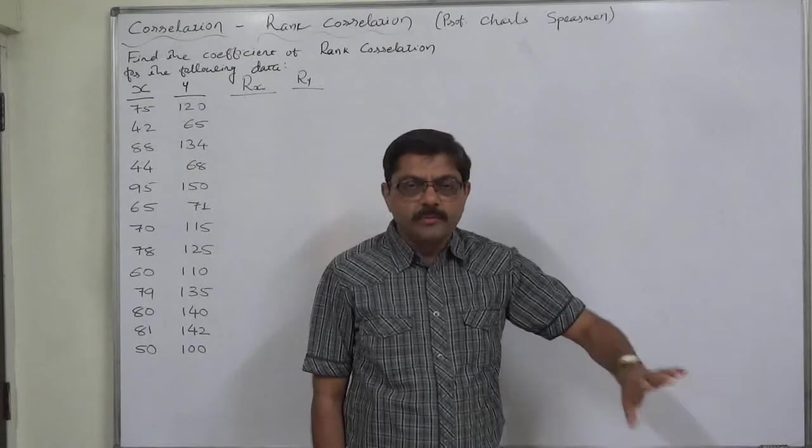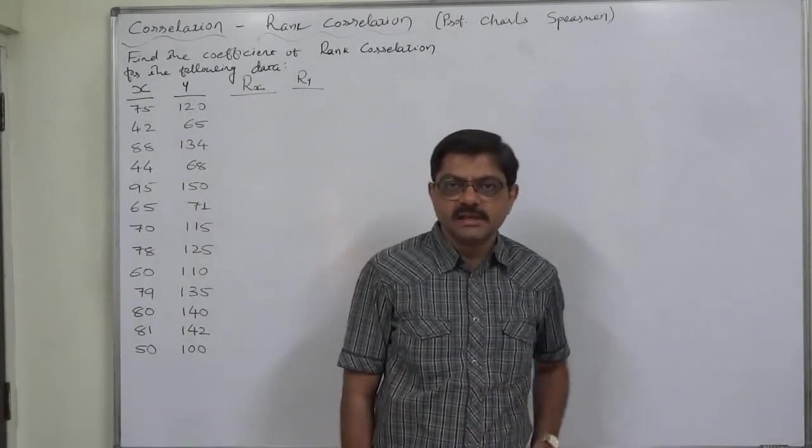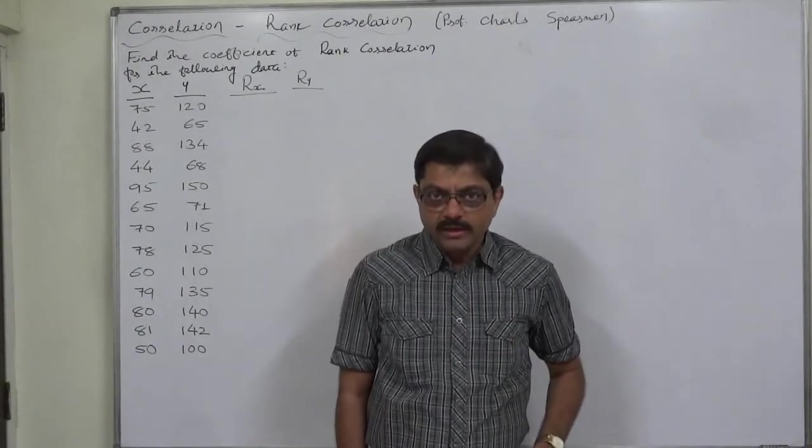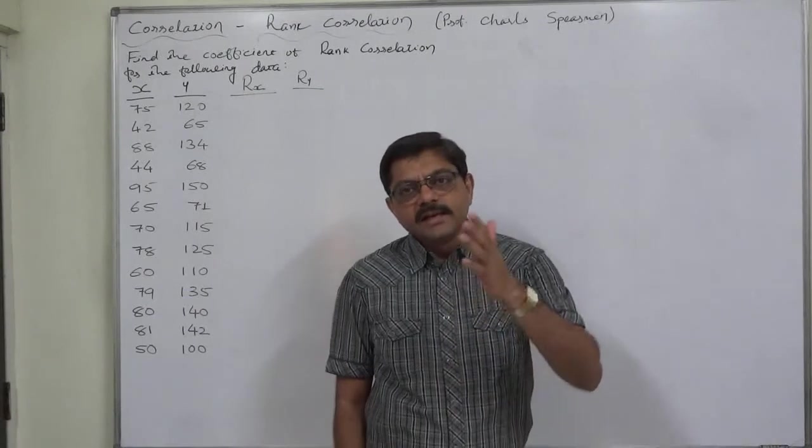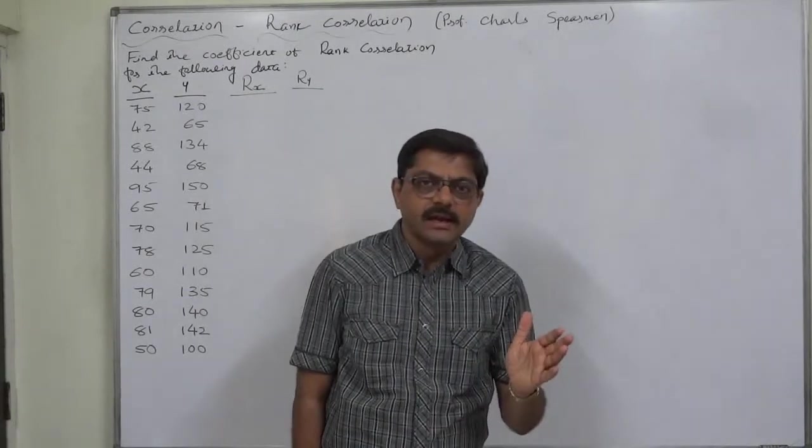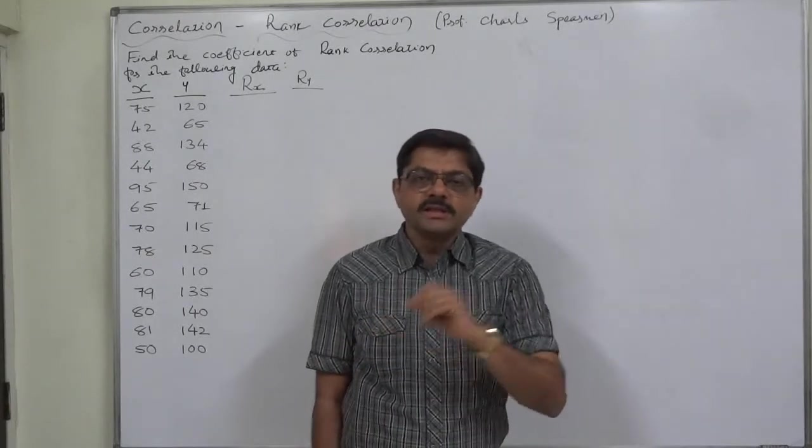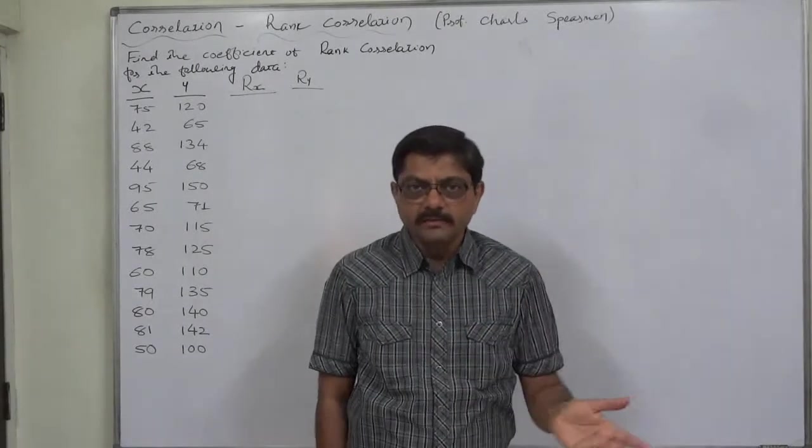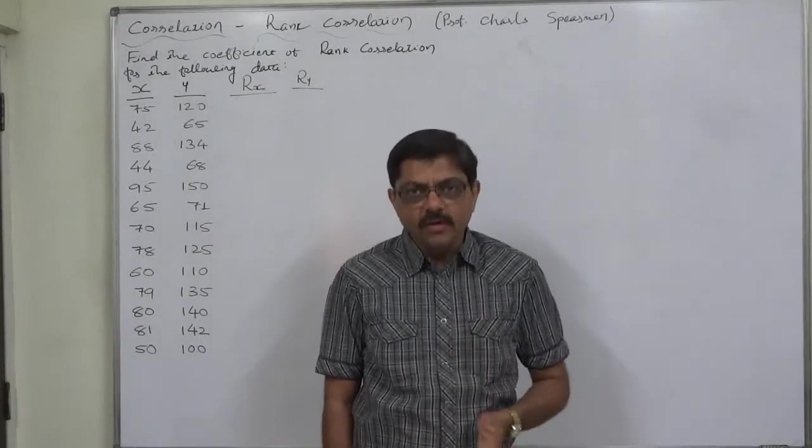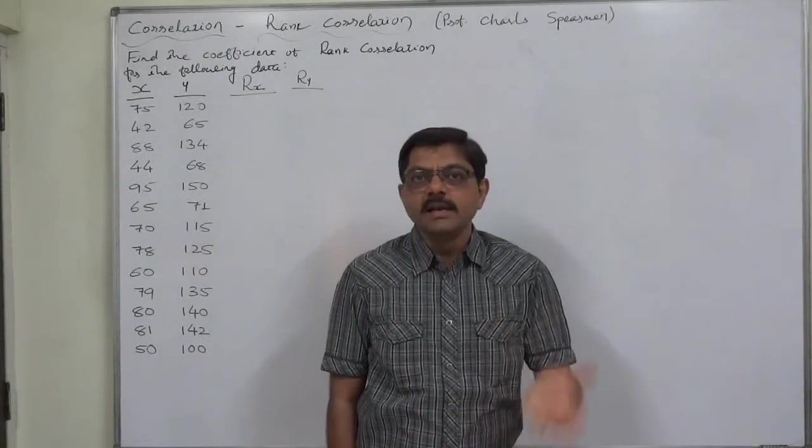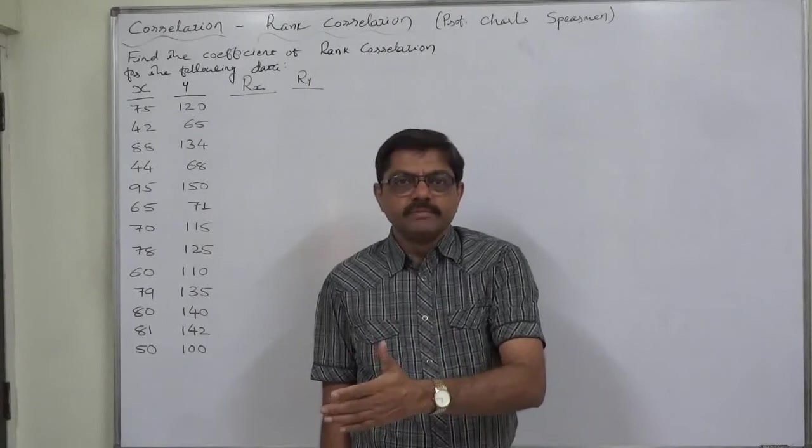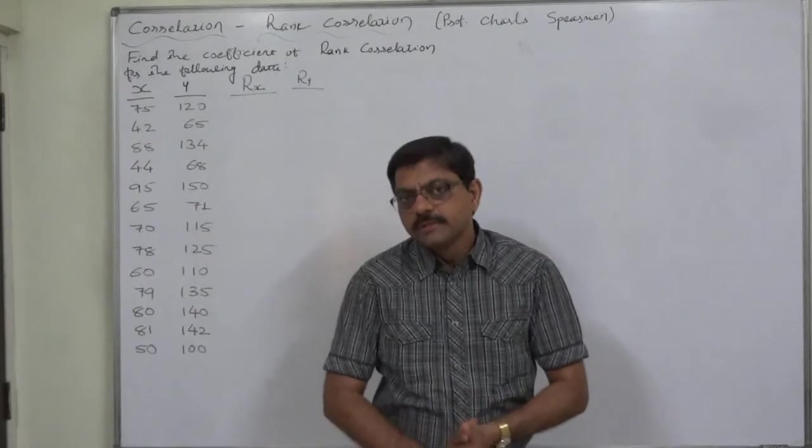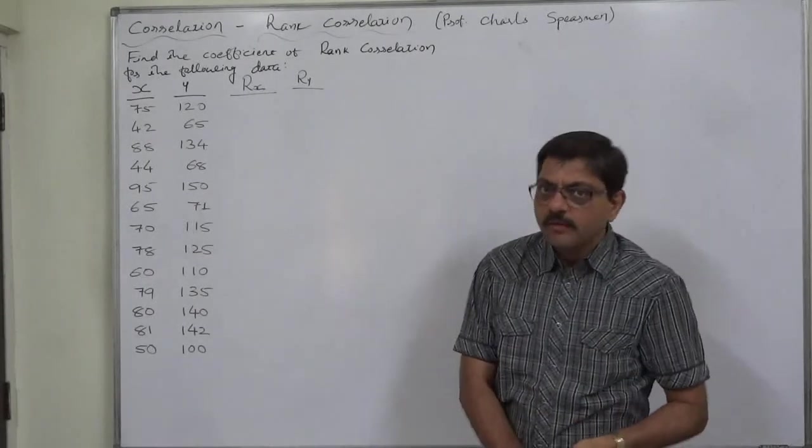Forget the computer packages or software packages. We are just discussing everything with reference to manual calculations only. Where the data has a very large range, the difference between the lowest and highest value is very large. And even after changing the origin and scale of the original data, the data is still not in a very convenient form to use Carl Pearson's method. We can use rank correlation method for this kind of data.